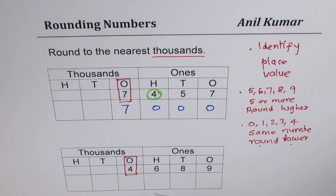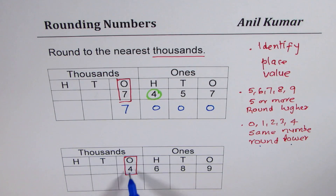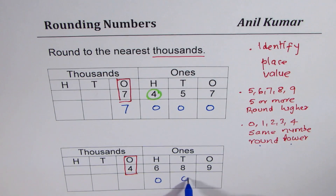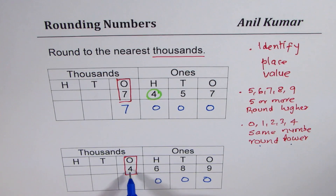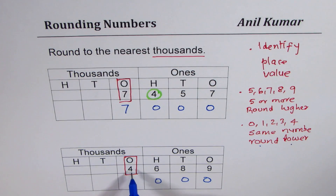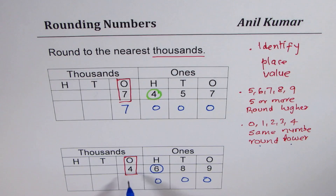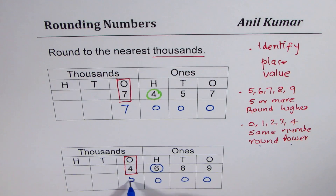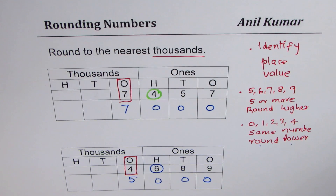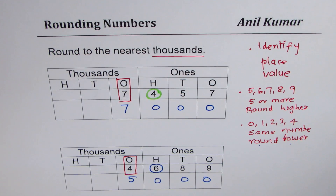In the next example, the number in the thousands place is four. Mark zeros to the right. Now four can remain as four or can be rounded higher — it depends on the number to the right. If the number on the right is five or more, increase it by one: four plus one is five, so we get 5,000.